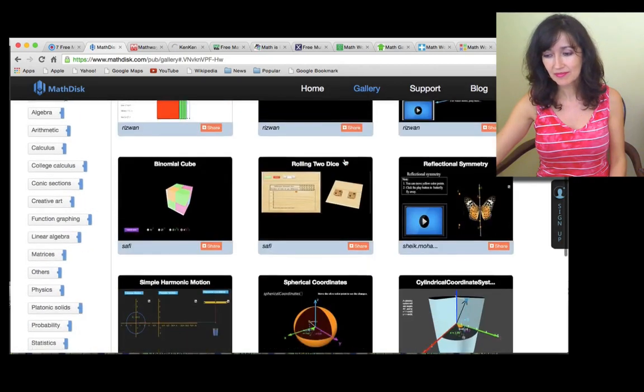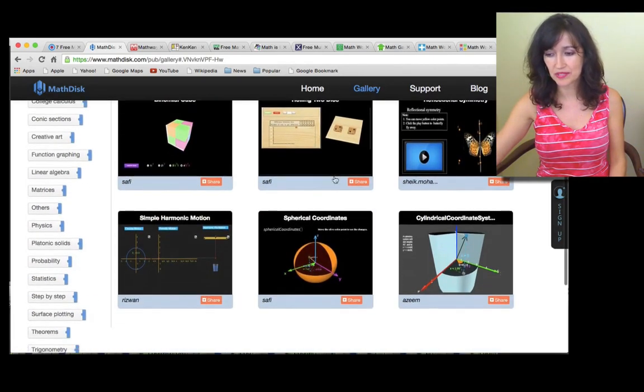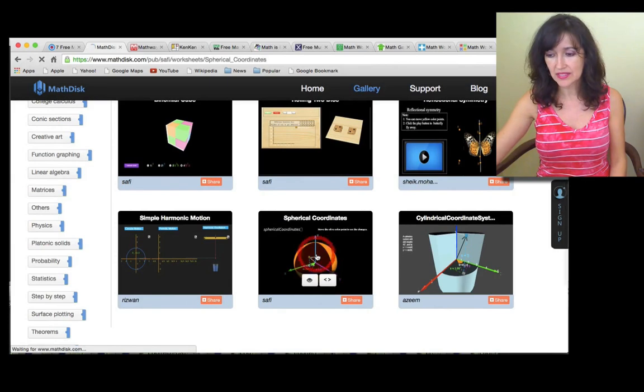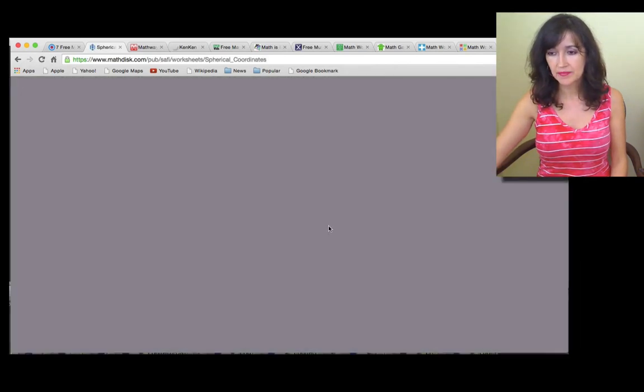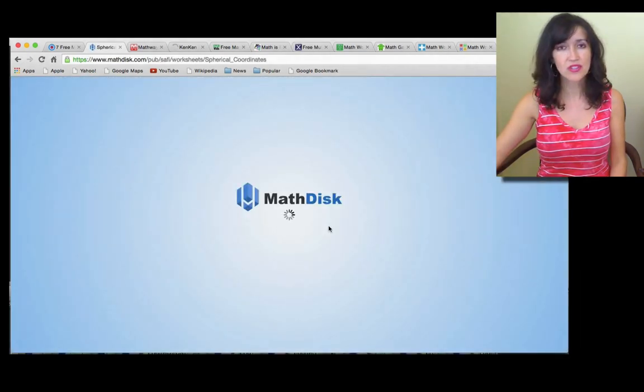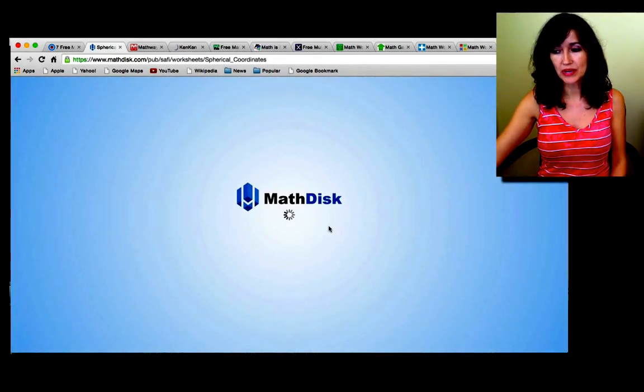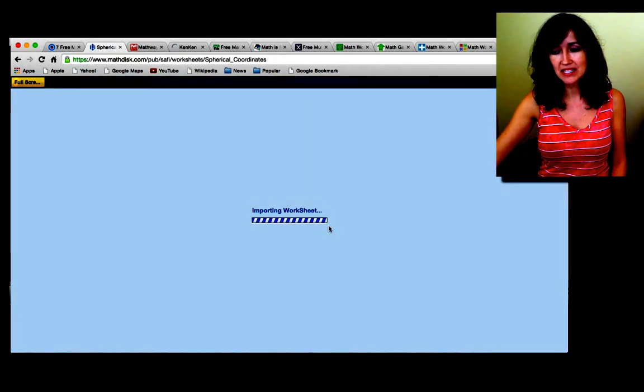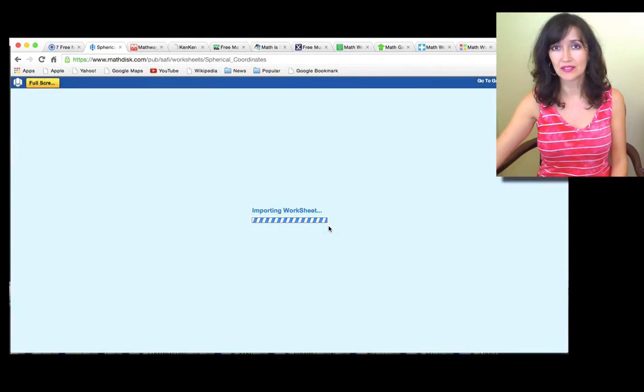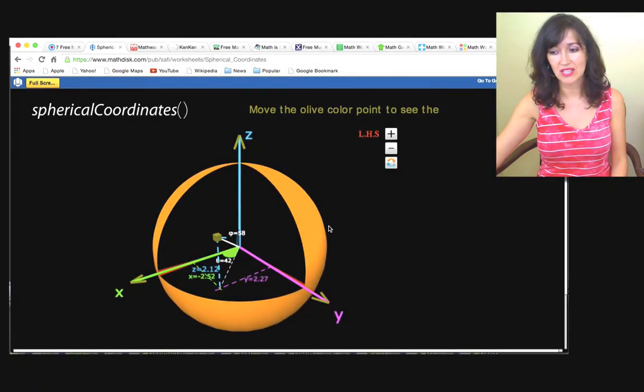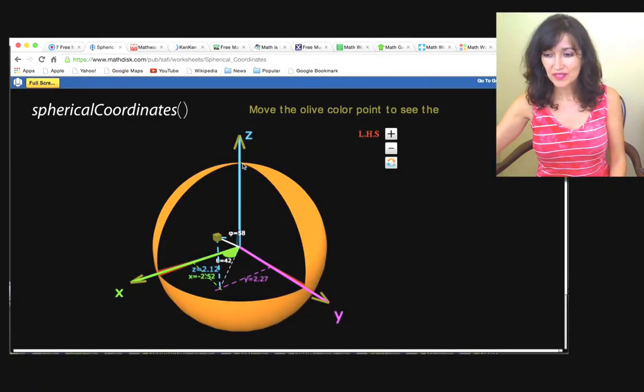For example, here, let's just choose any examples in the gallery. Let's say this one, spherical coordinates. And I'm sure you have to go through a learning curve in order to learn how to operate their website and their software. But if you're already in that level of math, this can be pretty useful to help you visualize and understand. So, here we go. This is the sphere.